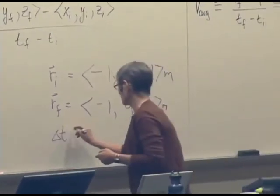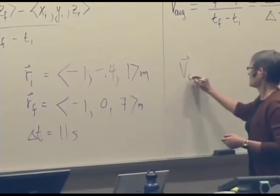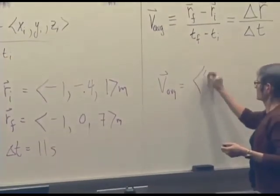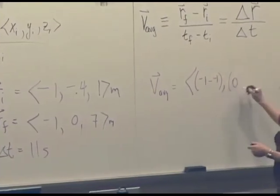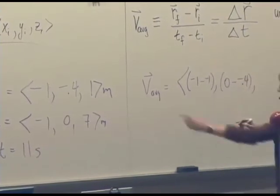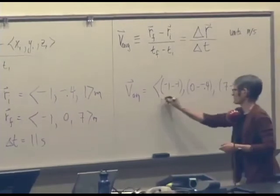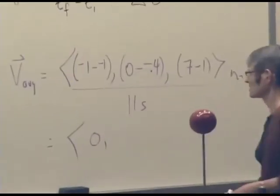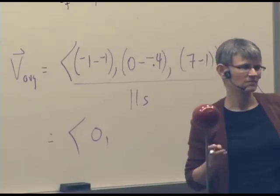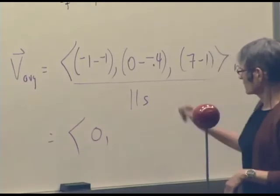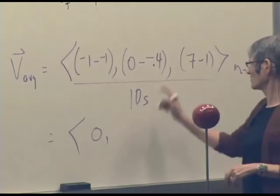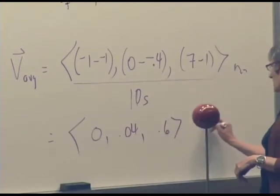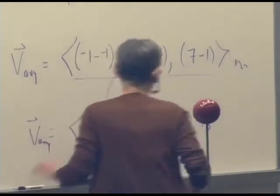Negative one, zero, seven meters, and delta T was 11 seconds, and so the average was negative one minus negative one, zero minus negative 0.4, seven minus one meters divided by 11 seconds, which comes out to, okay, we can do the zero easily. What's 0.4 over 11? 0.4 over 10 would be 0.04. We can make our life simpler if we estimated it to be 10 seconds, couldn't we? Okay, so that would make it 0.04, seven minus one is six, divided by so, 0.6 meters per second. Okay?